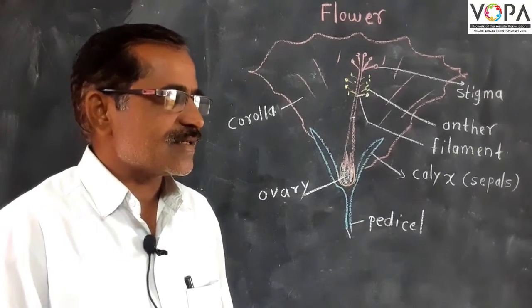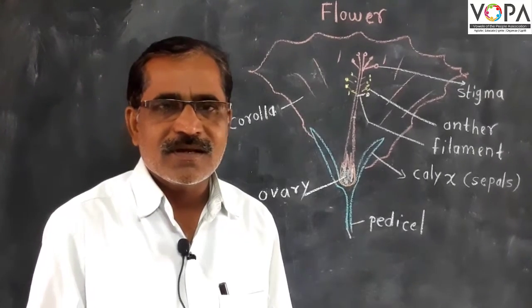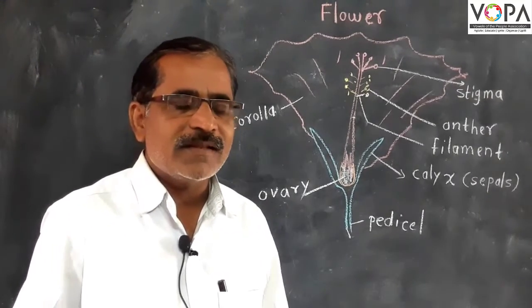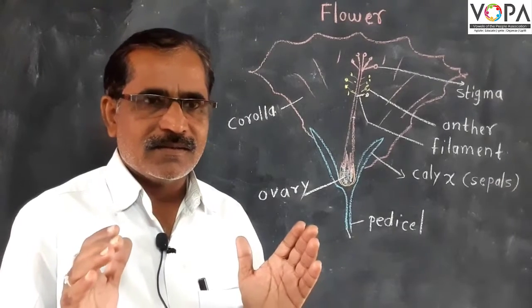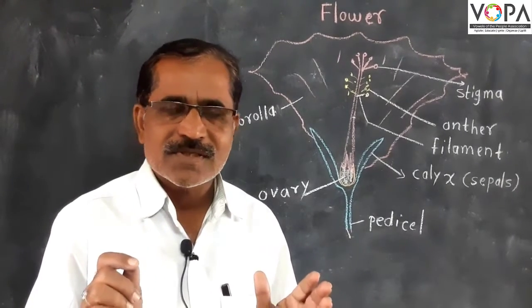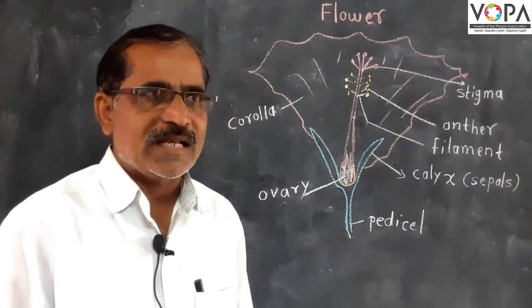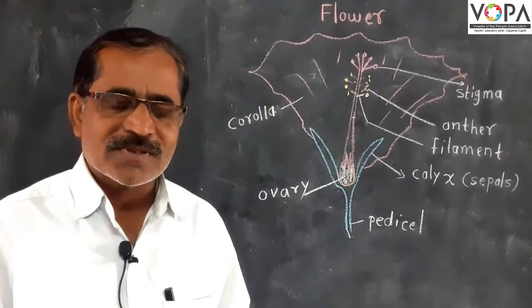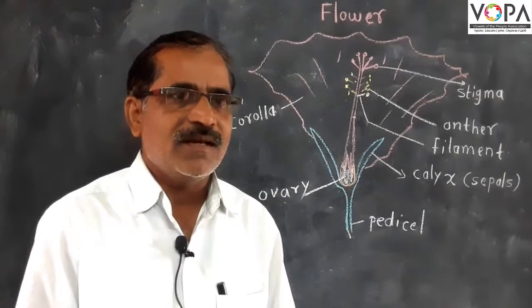What is calyx? Petals are covered by the leaf-like part called sepals. This is called calyx, and these sepals form the calyx.